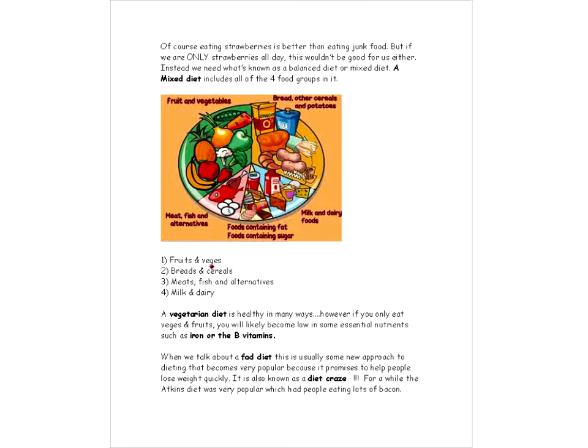So a mixed diet includes all the four food groups in it which you can see in this picture. So we've got fruits and veggies, bread and cereals, meats, fish and alternatives, and milk and dairy. Now a vegetarian diet is healthy in many ways. However, if you only eat veggies and fruits you'll likely become low in some essential nutrients. Do you remember what they are? Those are iron and the B vitamins. Iron we get from eating meat primarily.